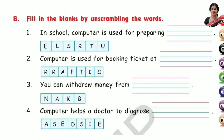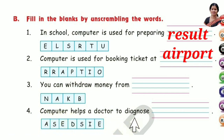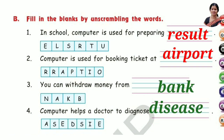Fill in the blanks by unscrambling the words. First: In school, computer is used for preparing results. Second: Computer is used for booking ticket at airport. Question 3: You can withdraw money from bank. Question 4: Computer helps a doctor to diagnose a disease. The answers are result, airport, bank, and disease.